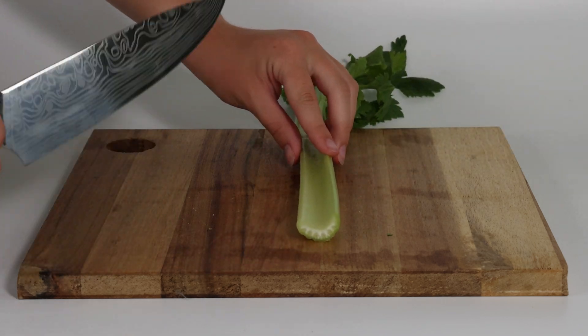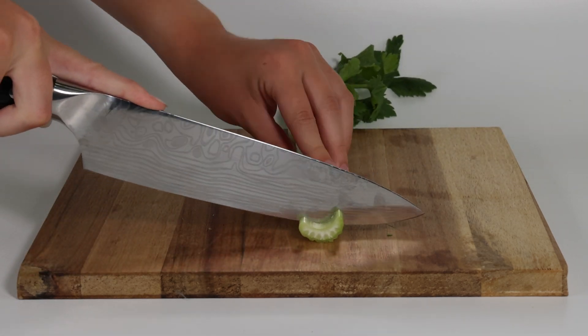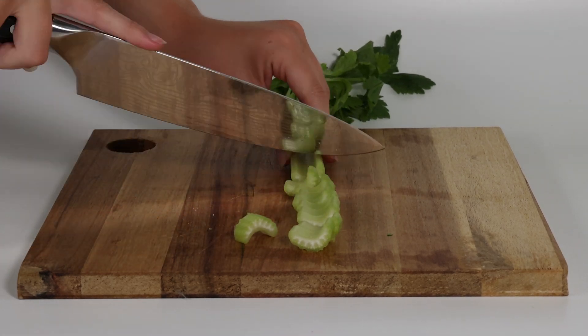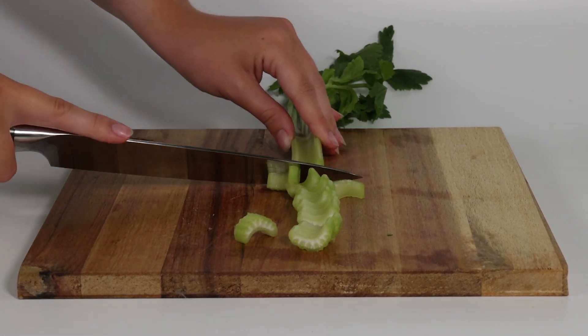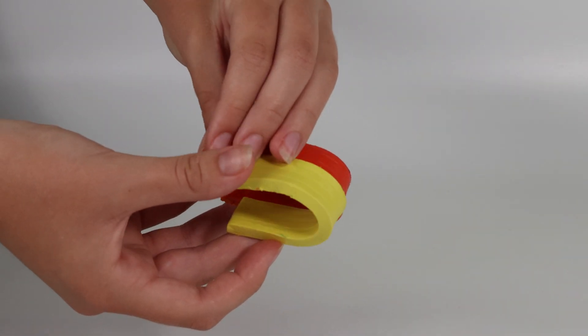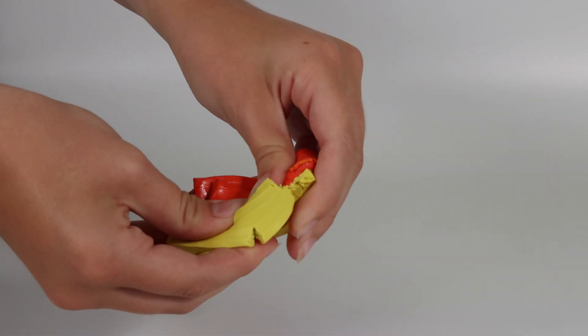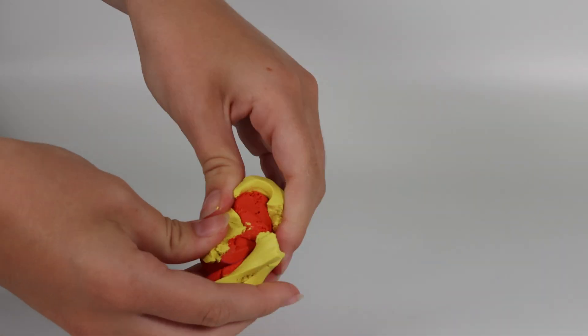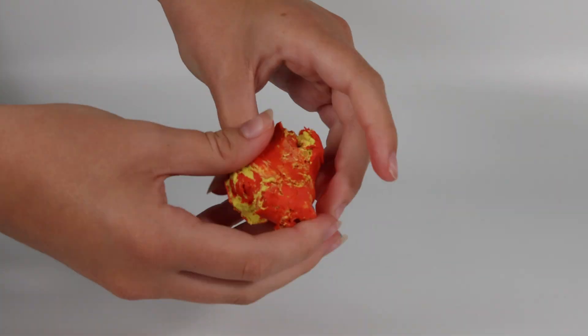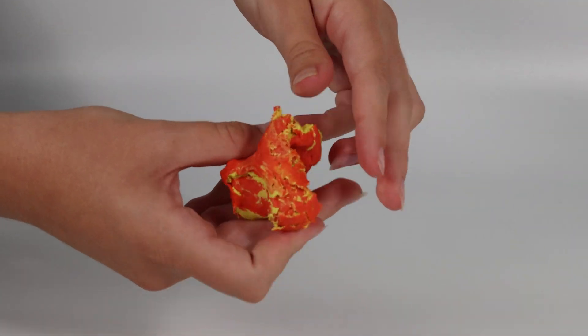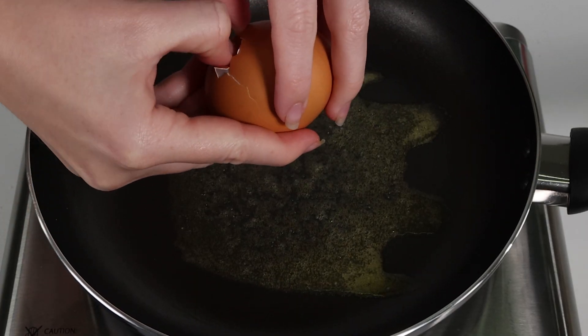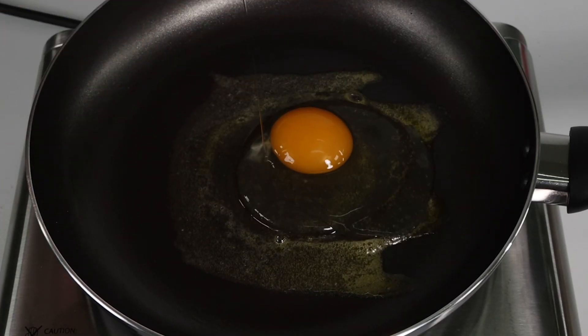We change matter when we cut a stalk of celery changing its shape. We change matter when we squeeze and squish modelling clay, changing its shape and colour too. We change matter when we cook an egg, changing its structure, texture and colour.